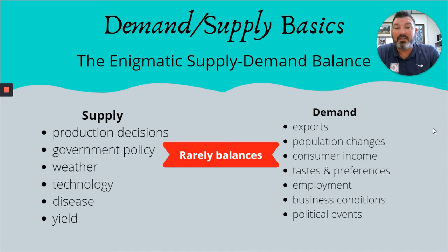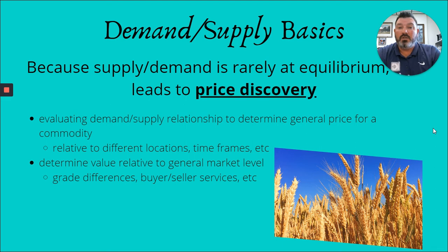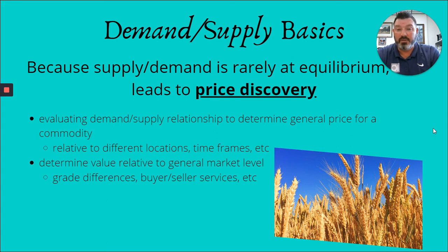It's always an enigmatic supply on one side and demand on the other, and they almost never balance exactly out. Because demand and supply are rarely in equilibrium, it leads to what we call price discovery, which is really what drives the marketplace. We have to evaluate that relationship and determine a general price for a commodity — the relative and general market levels, grade differences like high-value corn versus not-so-good quality corn, and what buyer and seller services can be provided.